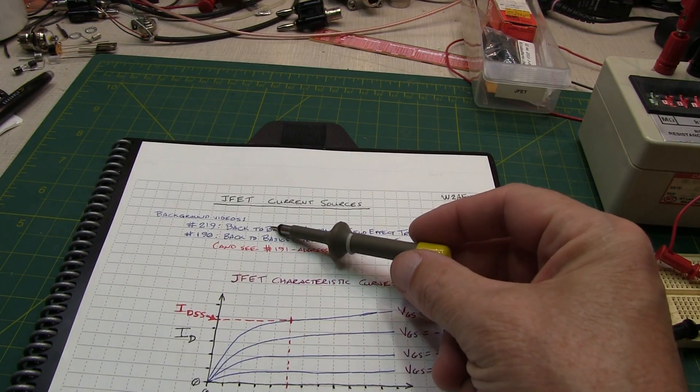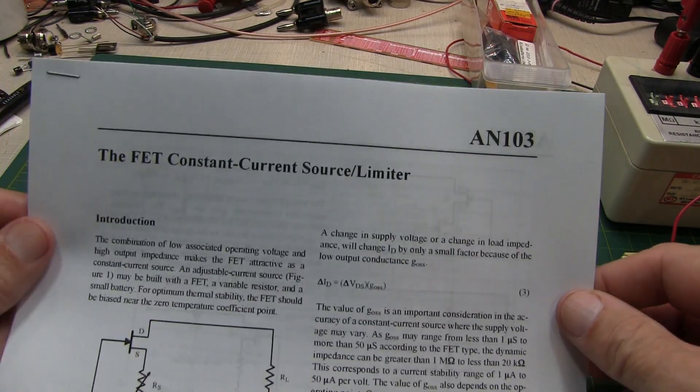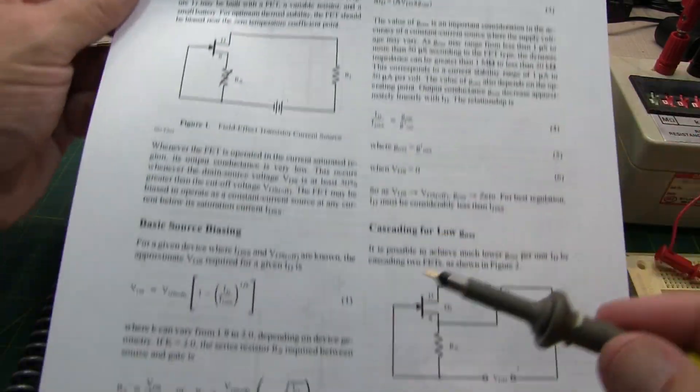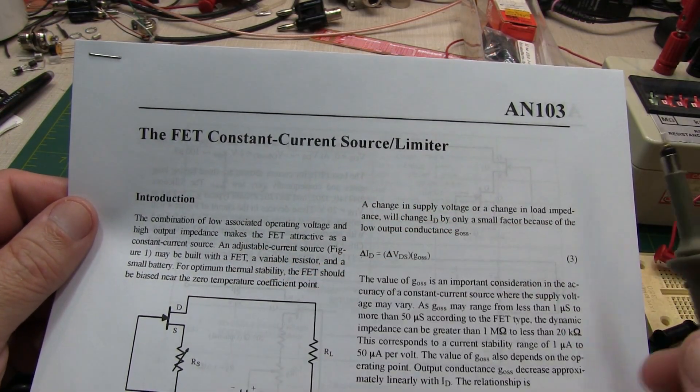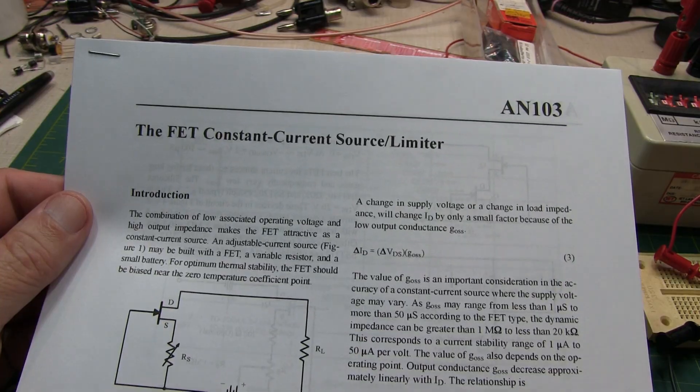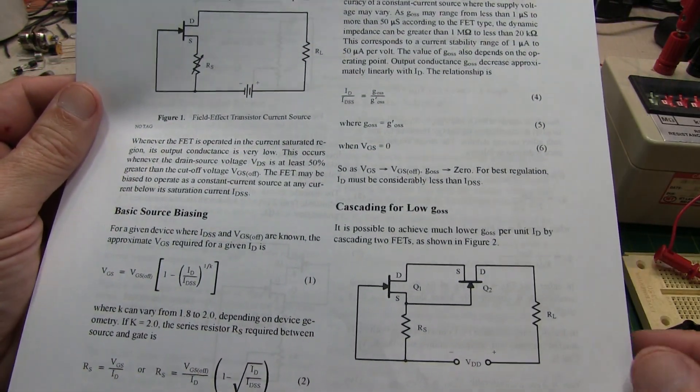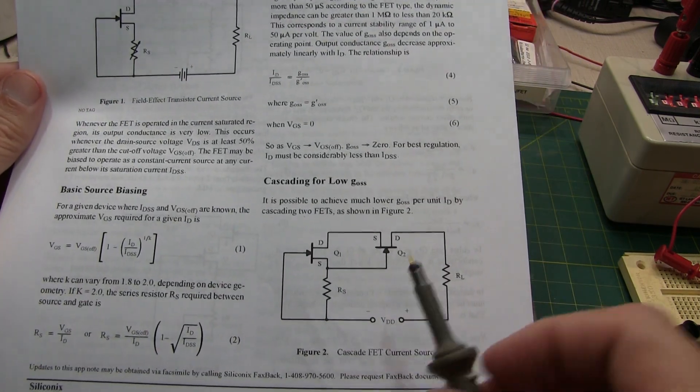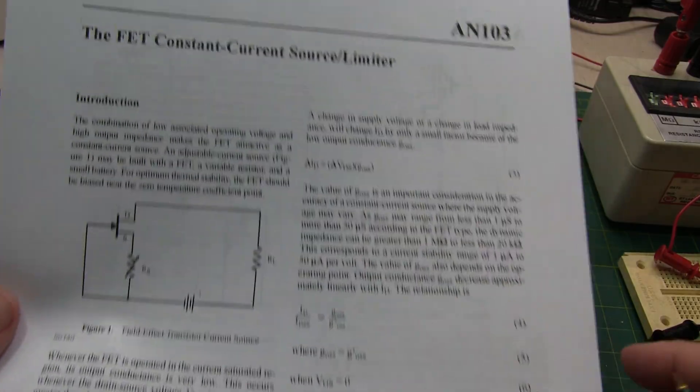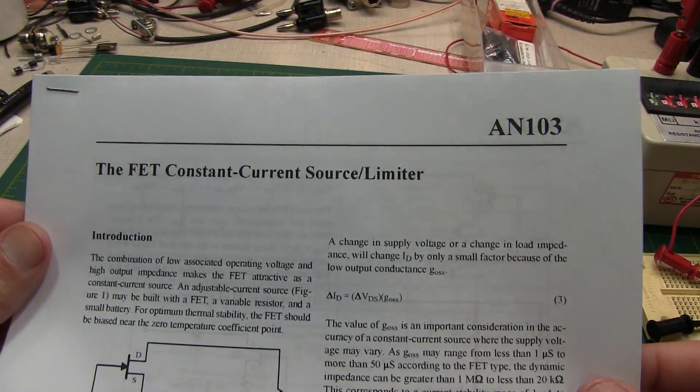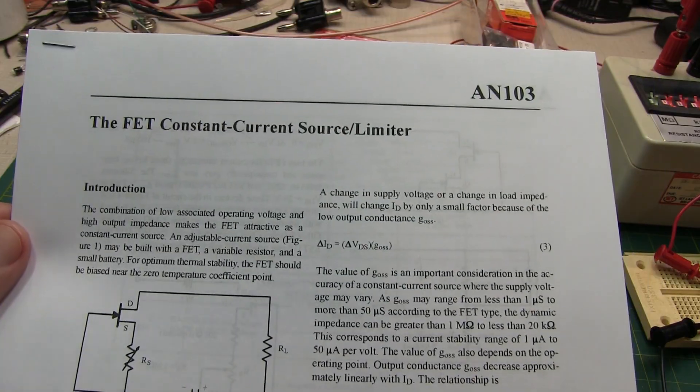The background videos I mentioned at the beginning, I'll link those down in video description down below. But I'm also going to give you a link to this application note from Siliconics. And this goes into a bit more detail of the FET current source, current limiter that we've been talking about in this video. It goes through some of the math if you're interested in some of that. I tried to avoid that in this particular video. And it does talk about that cascode configuration and how that improves things. It has a lot of other good information that goes into a lot more detail on this constant current source limiter configuration with the JFET, if you want to do your own study.